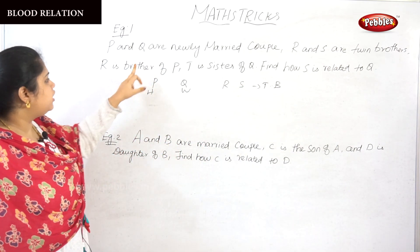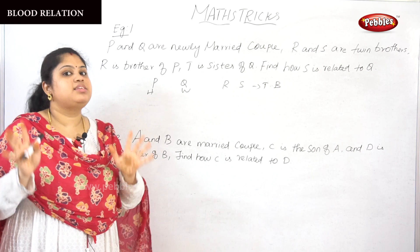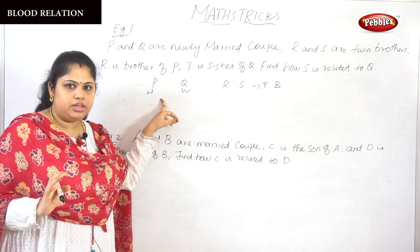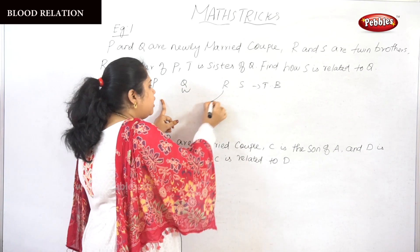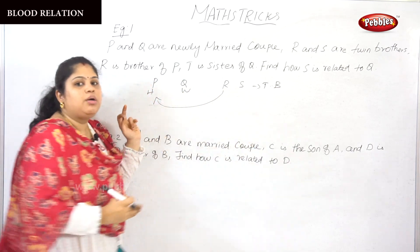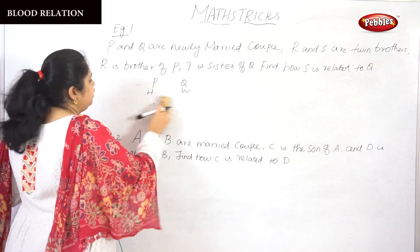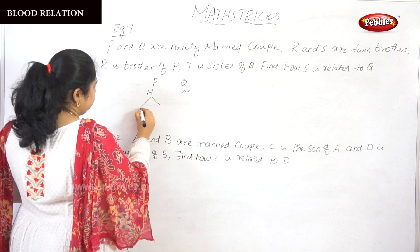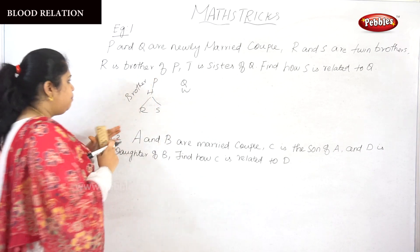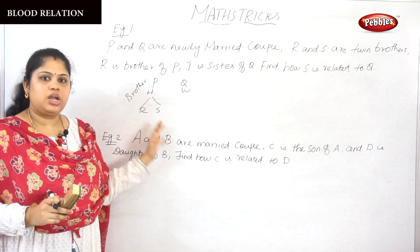R is brother of P. Because the answer lies in the question — R is a brother of P, so if we take R here, along with R, S also comes because they are twins brothers. So R and S are twins brothers of P. P, R, and S — the three of them are brothers, and among them R and S are twins.